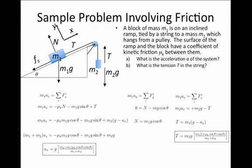And if we go back to our expression for T and plug in this value for a, we find that T is M2g times M1 times 1 plus mu k cosine theta plus sine theta all over M1 plus M2.